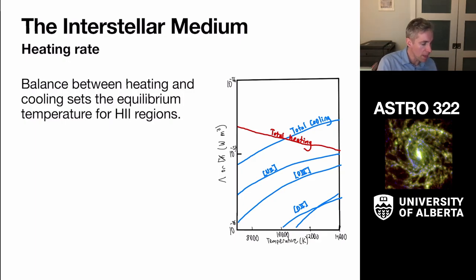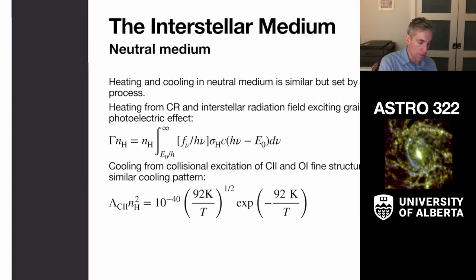And if there's more cooling than heating, the temperature drops. And then vice versa, the temperature rises up until they're at this crossover point, depending on the density here. And so that sets a thermal equilibrium.